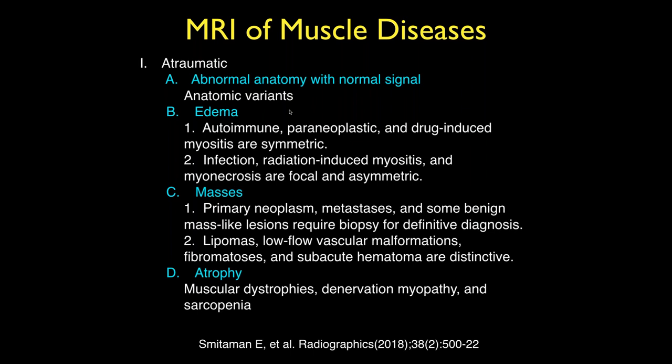These causes of edema are typically symmetric. Infection and radiation-induced edema are typically focal and asymmetric, so whether it's symmetric or not is very helpful. Masses include primary neoplasms, metastases, and some benign things — though masses typically require biopsy. One thing that's extremely important: most things that look like benign cysts end up being sarcomas, typically mixoid sarcomas.